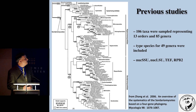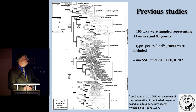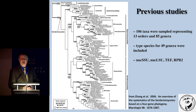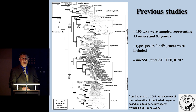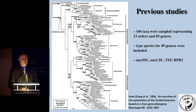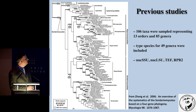To set up this talk, I wanted to highlight what I consider one of the more foundational, fundamental papers — Zhang et al., in the Deep Hypha issue of Mycologia in 2006. Several of us here were co-authors on this paper. What we did was sample 106 taxa representing 13 orders and 85 genera. The type species for 49 genera were included, analyzing nuclear small subunit, large subunit, translation elongation factor, and RPB2. This really was the foundational paper for establishing family and order level relationships in the class.